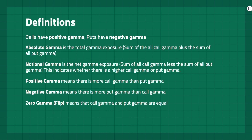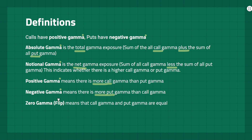Before we proceed, here are some quick facts and definitions. From a modeling perspective, calls have positive gamma and puts have negative gamma with no theoretical upper limit. Absolute gamma is the total gamma — the sum of all call gamma plus the sum of all put gamma. Notional gamma is the net gamma exposure — the sum of all call gamma less the sum of all put gamma — and this indicates whether there is higher call gamma or put gamma. Positive gamma means more call gamma than put gamma; negative gamma means more put gamma than call gamma. Zero gamma, also known as the flip, means call gamma and put gamma are equal.